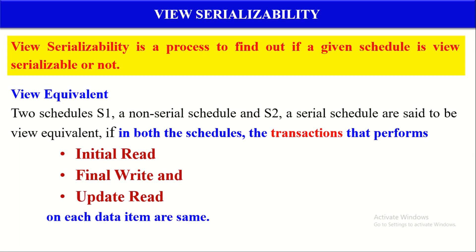Two schedules, let them be S1 and S2, are said to be view equivalent if in both the schedules the transactions that perform initial read, final write, and update read on each data item are the same.